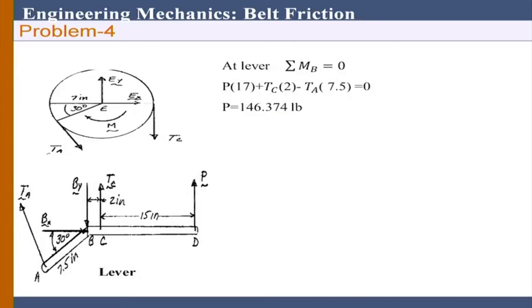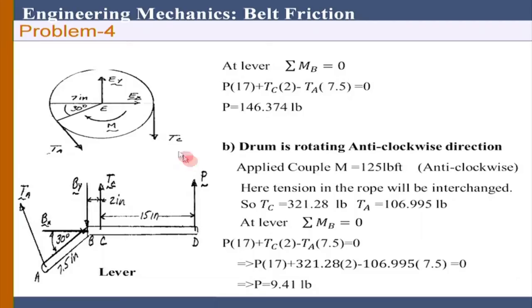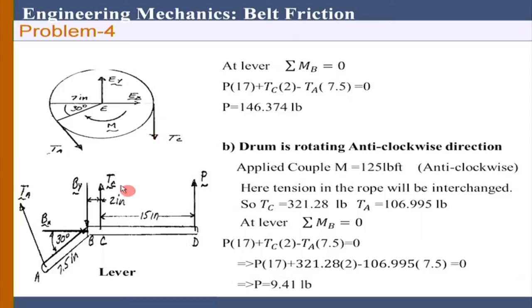Now the problem can just be reversed - it is now rotating counterclockwise. If it rotates in the anti-clockwise direction, then T_C is greater than T_A - that is the only thing that changes. Just reverse the problem and solve the same way. You get an answer of 9.41 pounds. So to rotate it clockwise I need a larger force than to rotate it counterclockwise. Why? I leave that as homework - why rotating clockwise requires a larger force than counterclockwise.